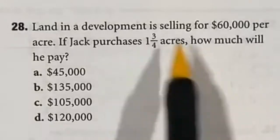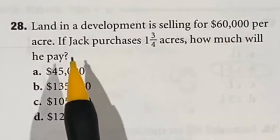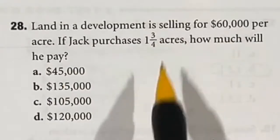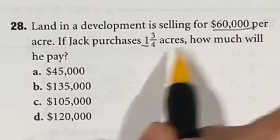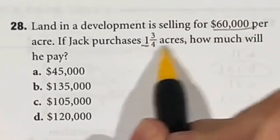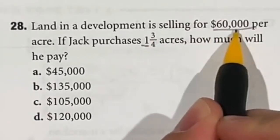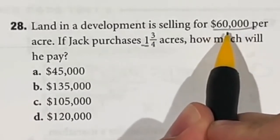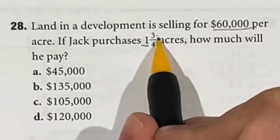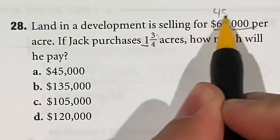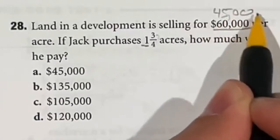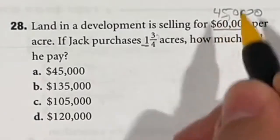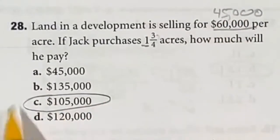For question 28, land is selling for $60,000 per acre and he's buying one and three-fourths acres. Obviously the one means he's spending $60,000. For the three-fourths, divide $60,000 into fourths: that's $15,000 each, so $15,000, $30,000, $45,000, then $60,000. Three of those lands us at $45,000. Adding the two together: $60,000 plus $45,000 is $105,000, meaning our answer is C.